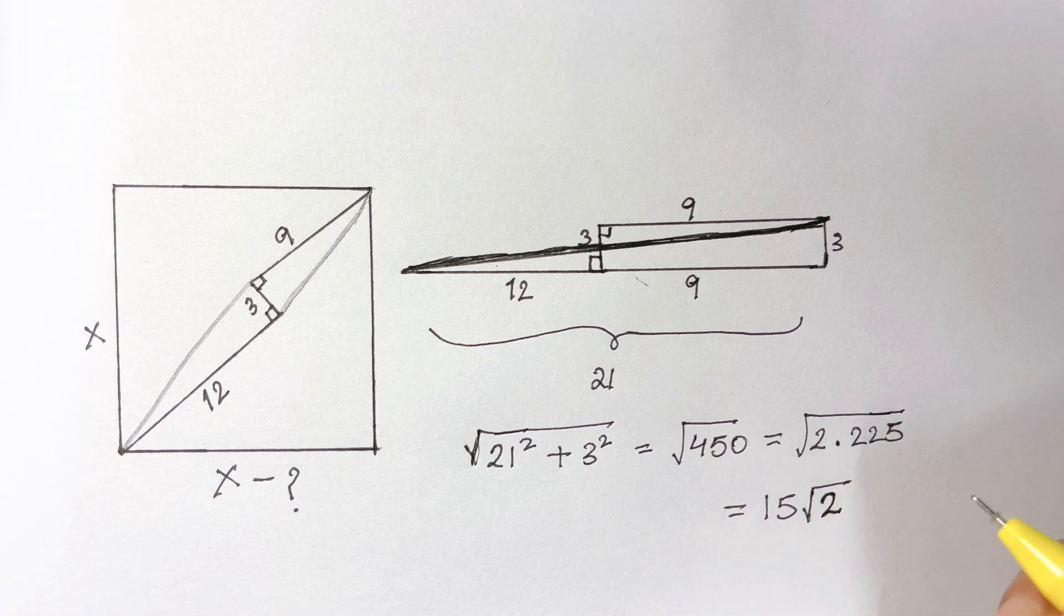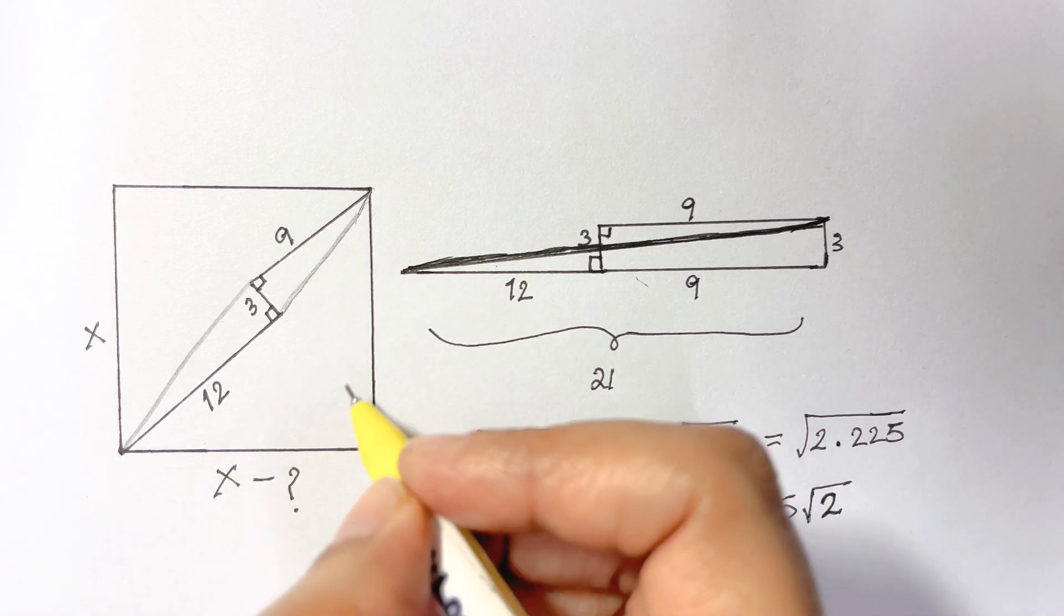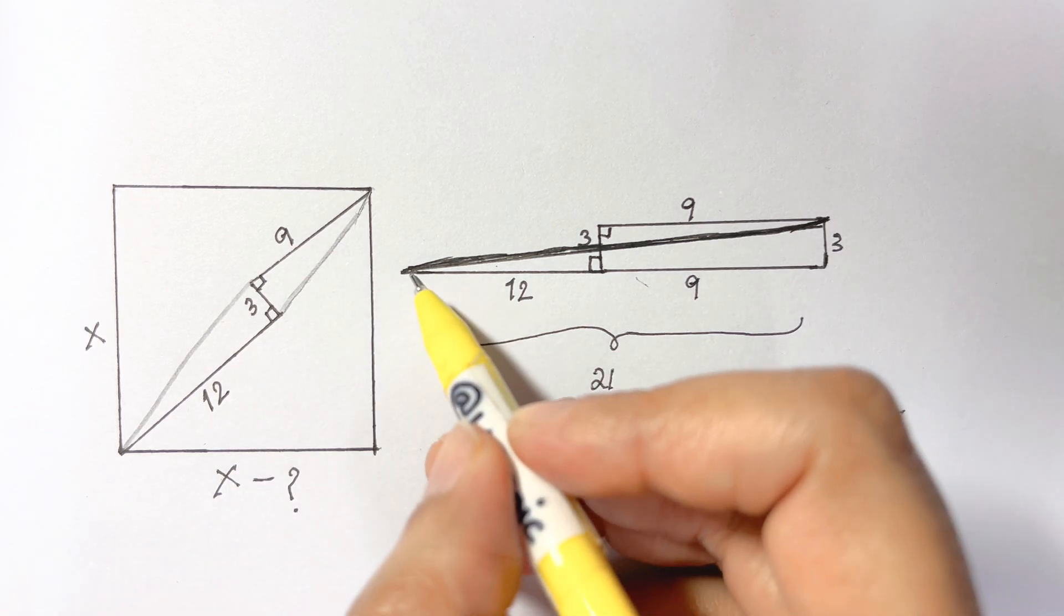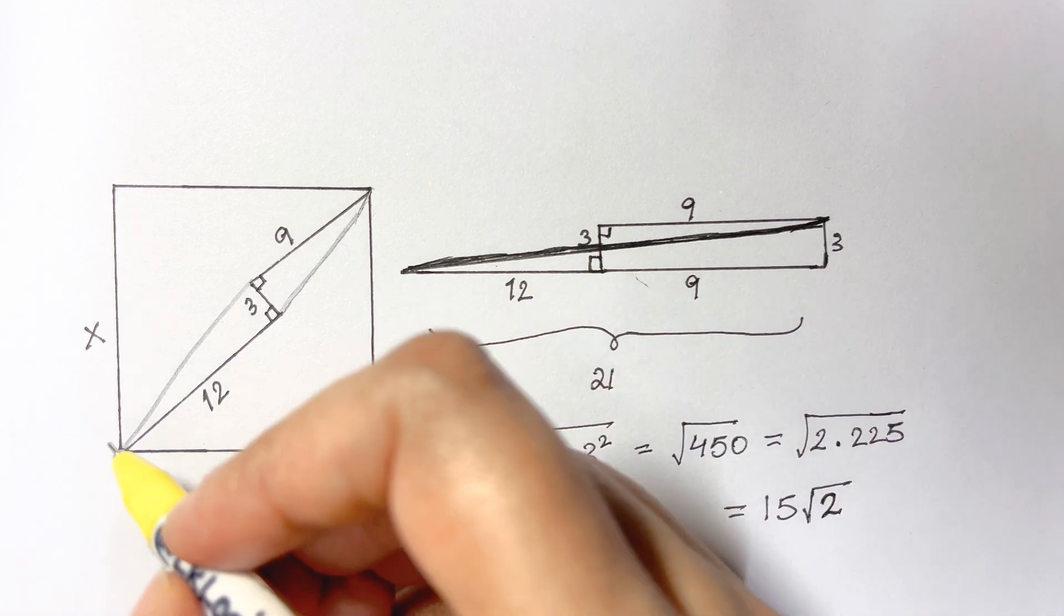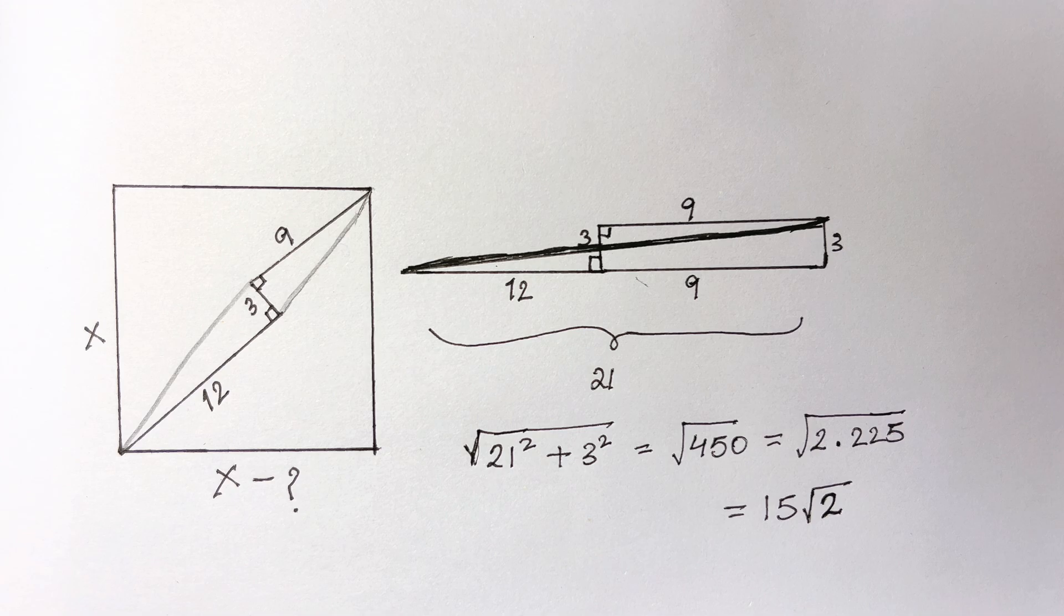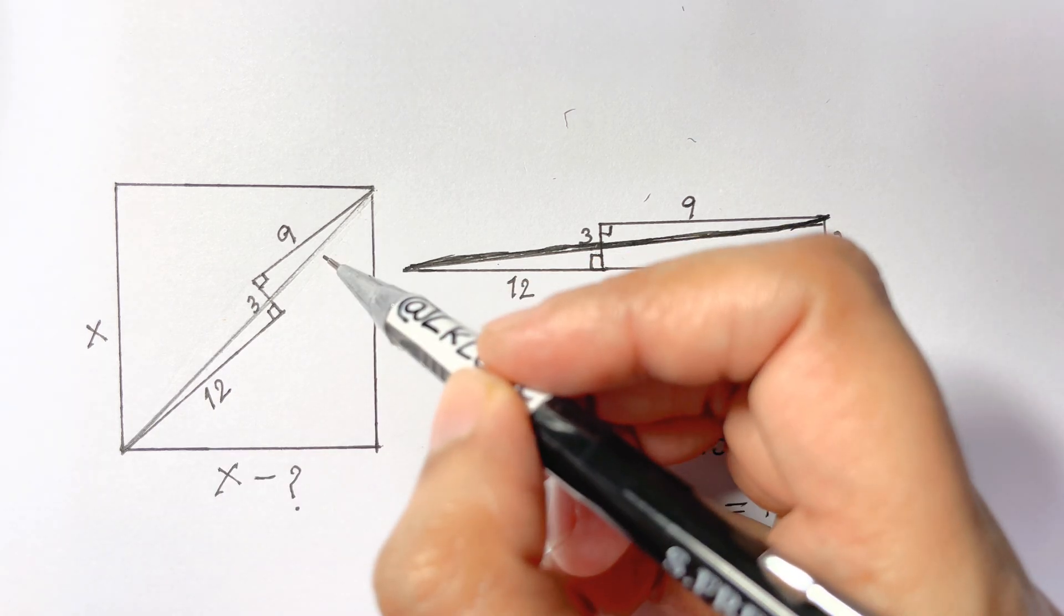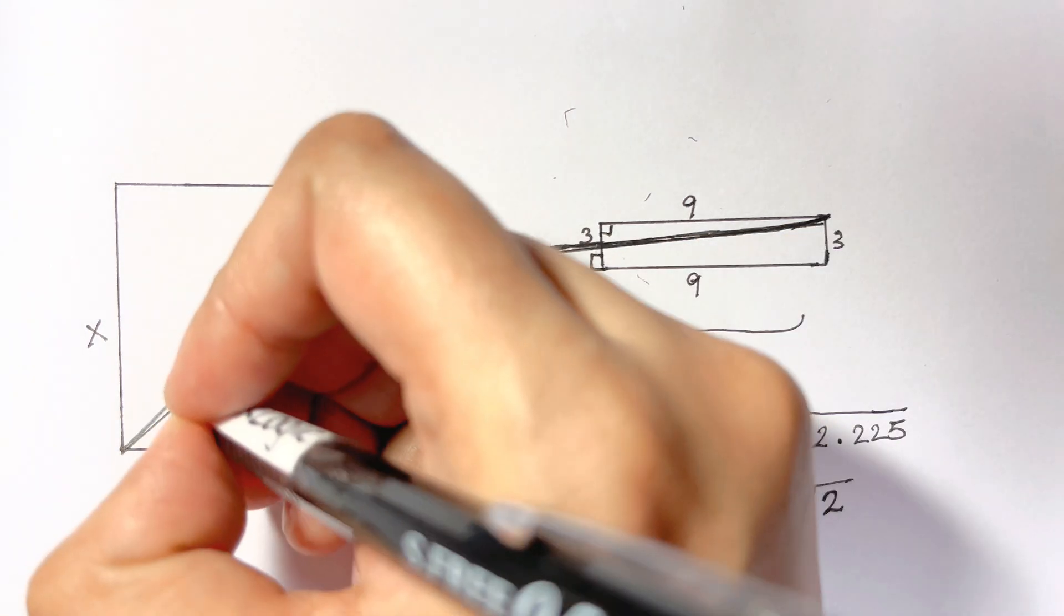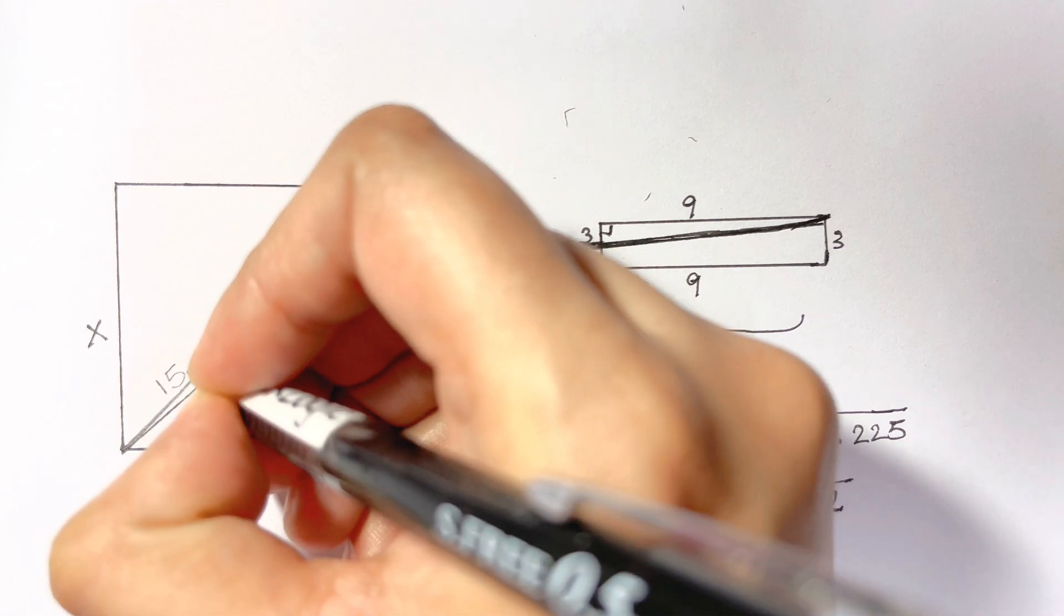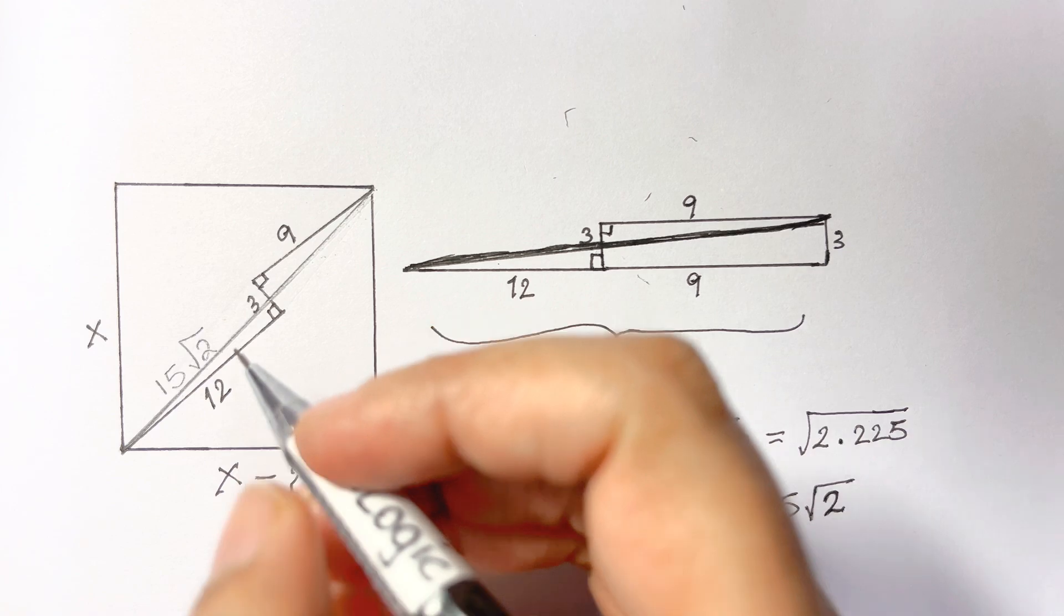So what it is? Let's look at the picture back here. What we have? We've just found that this hypotenuse is the diagonal of the square and it is equal to 15√2.